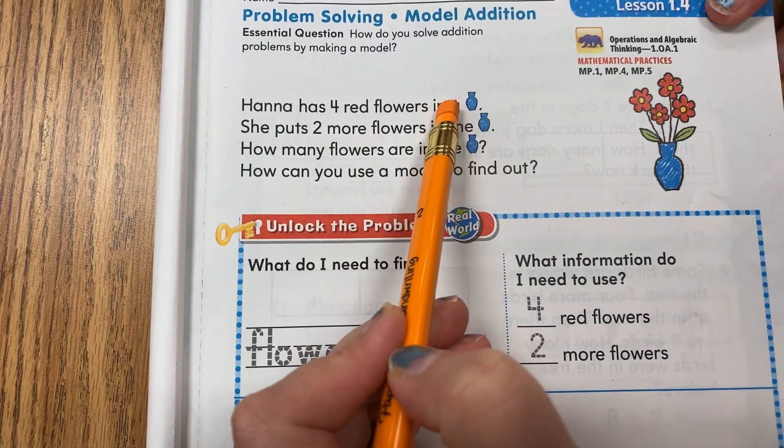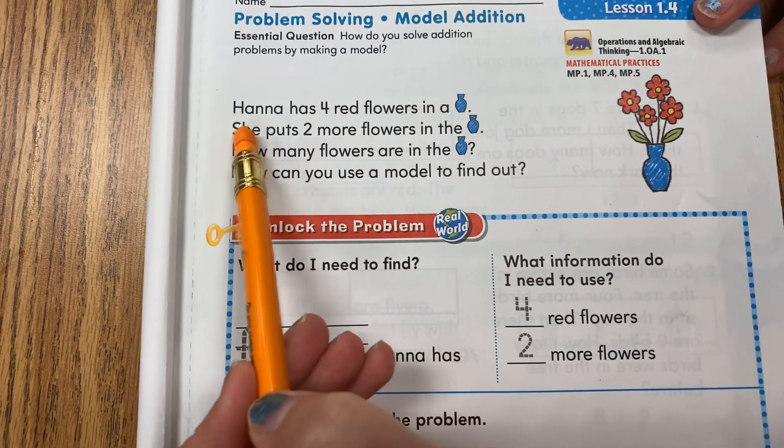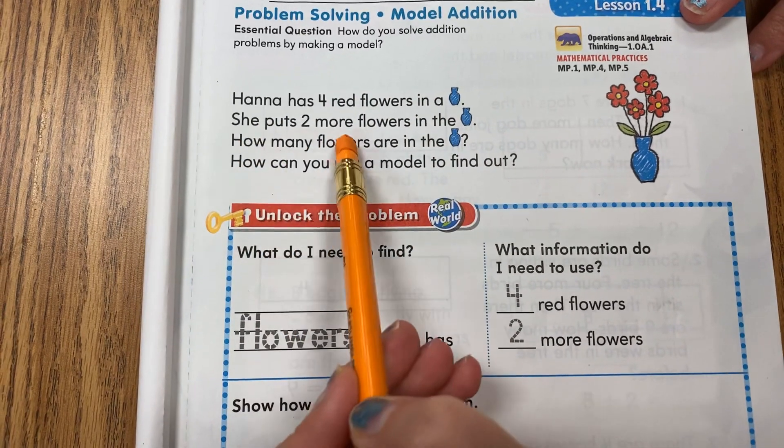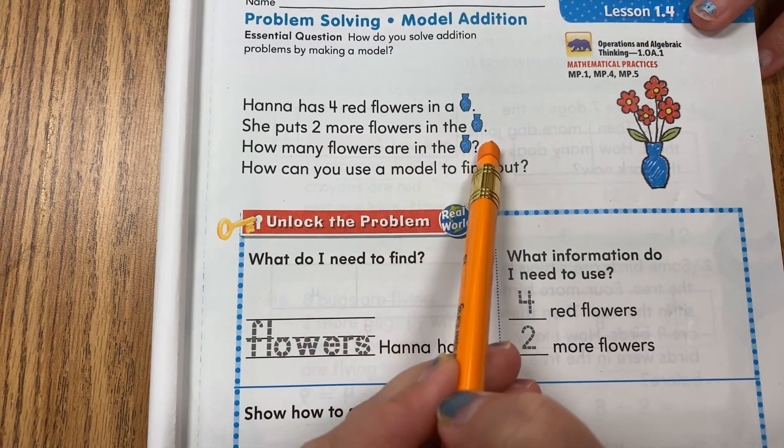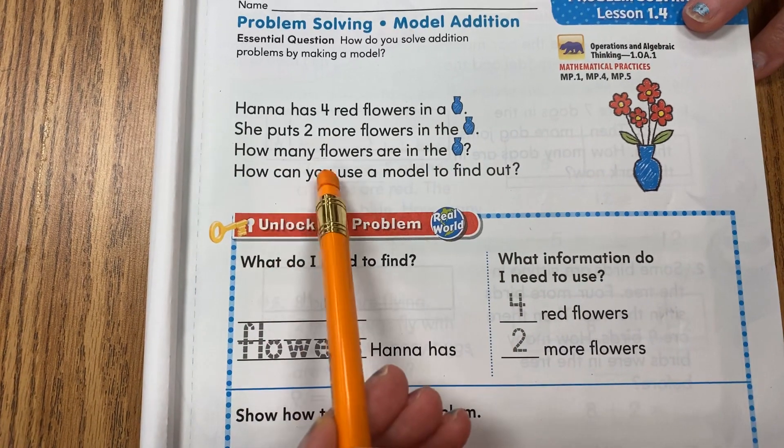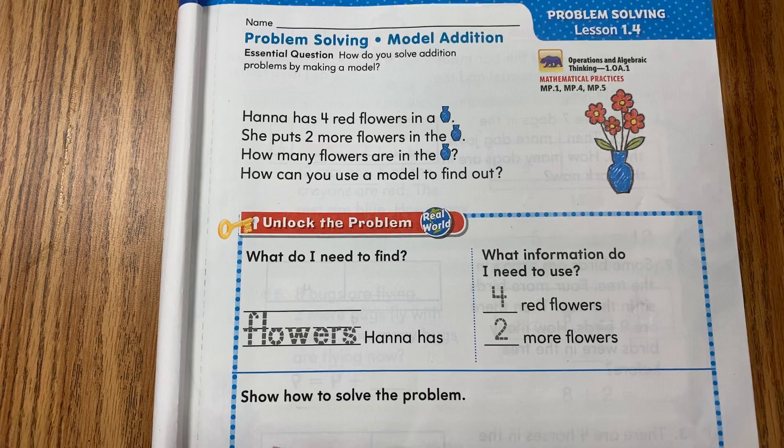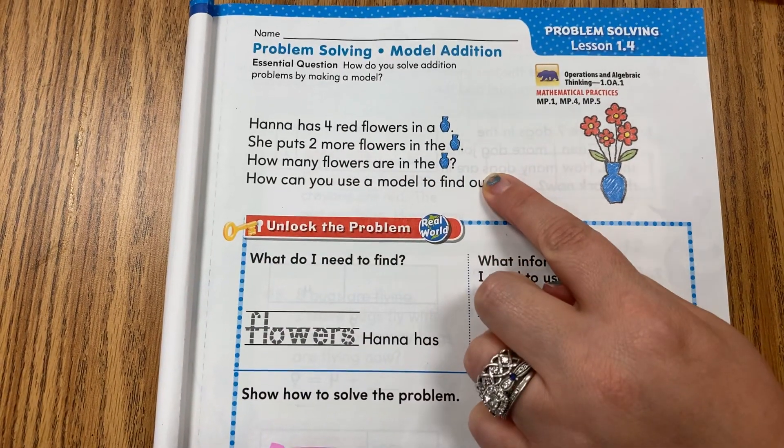First thing we have to do is read our problem. Pencils up and tracking with me. Hannah has four red flowers in a vase. She puts two more flowers in the vase. How many flowers are in the vase? How can you use a model to find out?